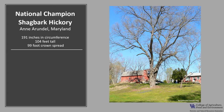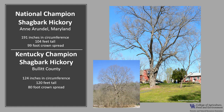The National Champion Shagbark Hickory is in Ann Arundel, Maryland. It is 191 inches in circumference, 104 feet tall, with a 99 foot crown spread. The Kentucky Champion Shagbark Hickory is located in Bullitt County and is 124 inches in circumference, 120 feet tall, with an 80 foot crown spread. If you'd like to know more about champion trees, check out the American Forests Champion Tree Register or the Kentucky Champion Trees at the Kentucky Division of Forestry.